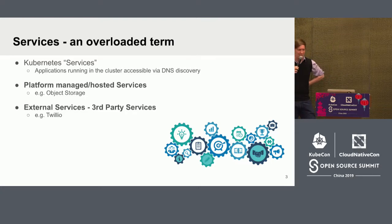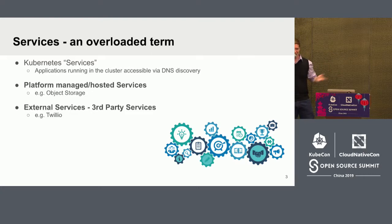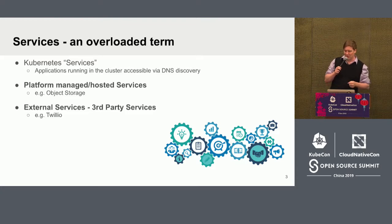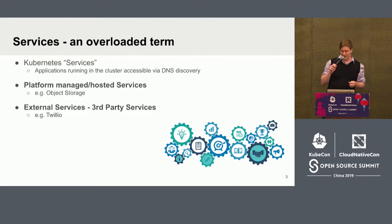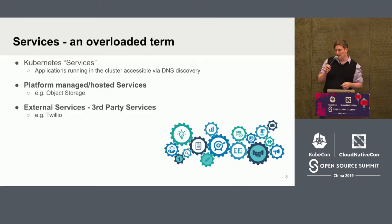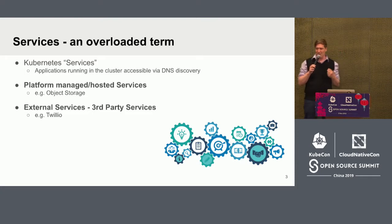Before I go any further, let me define what I mean when I say "services," because within the realm of Kubernetes that word is overloaded. Kubernetes itself has a notion of services — something reachable on the network at a specific address within the cluster, discoverable via DNS. At the same time, we also have platform-managed hosted services like object storage and various flavors of databases, and then external services, which can include relational databases, subscriptions to APIs like Twilio, or billing services. It's really those second two categories I mean when I say services.